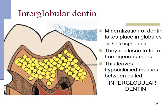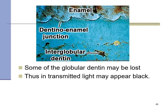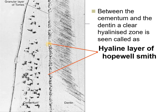Each of these globular mineralization zones are called calcospherites. These hypocalcified areas of interglobular dentine show collagen fibers or dentinal tubules passing through them — they look light in transmitted light and dark in reflected light. This is more prominent at the junction of the mantle and the circumpulpal dentine. Tom's granular layer is a phenomenon seen on the root. Adjacent to the cementum, there is a transparent layer called the hyaline layer of Hopewell-Smith. Due to looping and coalescing of dentinal tubules, the cross-section appears as granules.